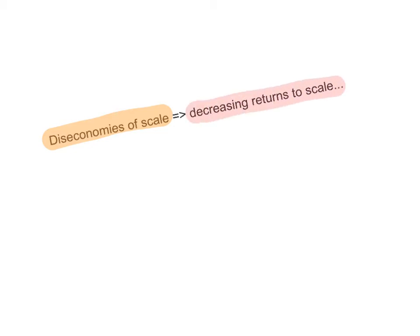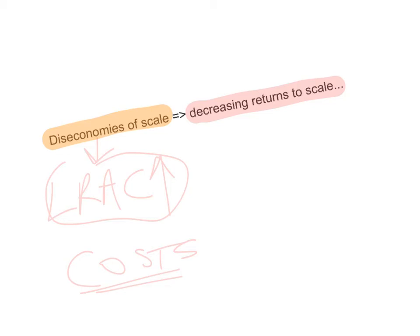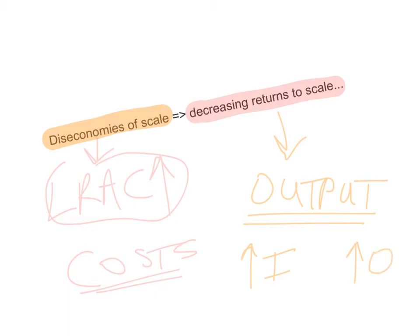The same is true with diseconomies of scale. Diseconomies of scale looks at the cost side of things — the long run average cost is rising due to increasing the level of output. Decreasing returns to scale looks at the output side: it is concerned with the level of output compared to the change in the level of inputs. Decreasing returns to scale occurs when you increase your inputs but the increase in output is less than the increase in inputs.